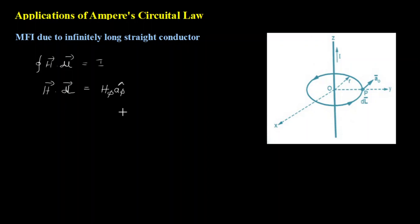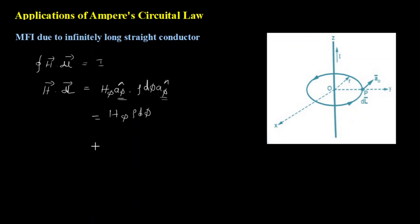Since the magnetic field intensity is always tangential to the closed path, I have to consider only the phi component of H vector. As you know, H vector is supposed to have all three components — rho, phi, and z in cylindrical coordinates. But here H vector is going to have only the phi component, measured at any point on the circular path. So my H vector is just H_phi times a-phi cap, where H_phi is the magnitude. And dl is rho d-phi a-phi cap. Since a-phi cap dot a-phi cap equals 1, I get H dot dl as H_phi rho d-phi.